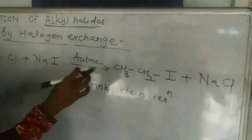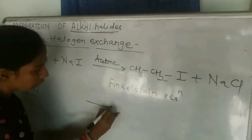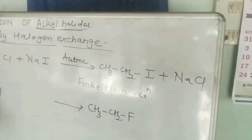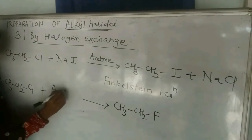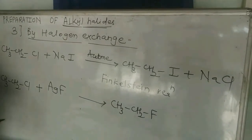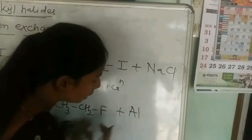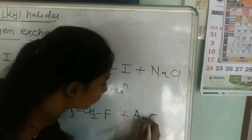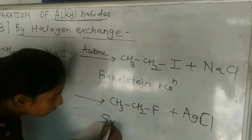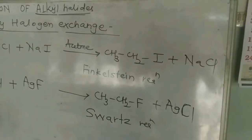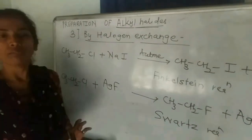For the preparation of alkyl fluoride from alkyl halide, start with an alkyl chloride and replace chlorine with fluorine. The reagents used can be silver fluoride, mercury fluoride, arsenic fluoride, or antimony fluoride. The byproduct formed (e.g., HgCl2) also precipitates and is easily separated. This named reaction for preparing alkyl fluorides is called the Schwartz reaction. These two halogen exchange reactions — Finkelstein (for iodides) and Schwartz (for fluorides) — are the two named reactions in this category.